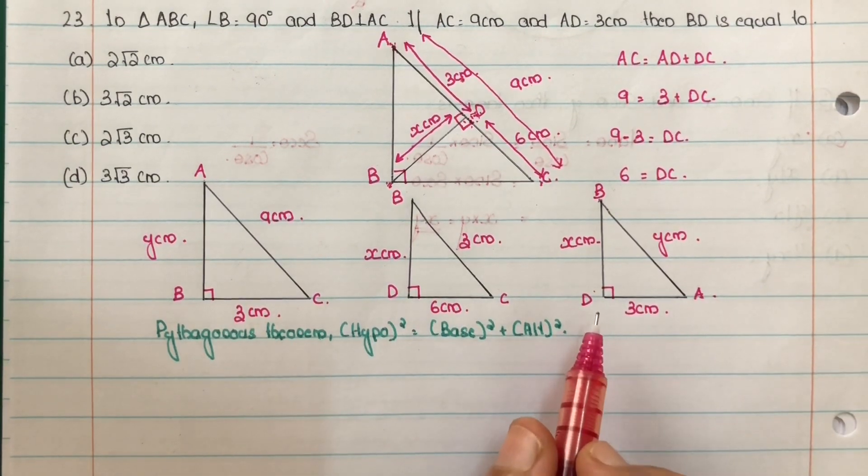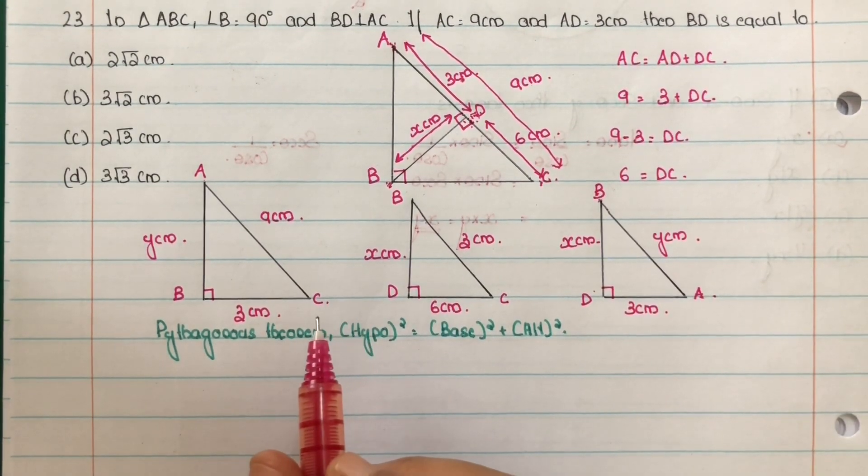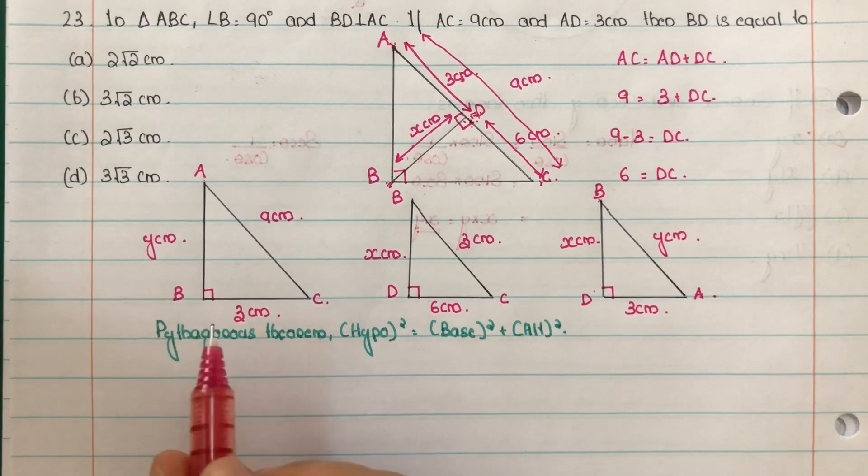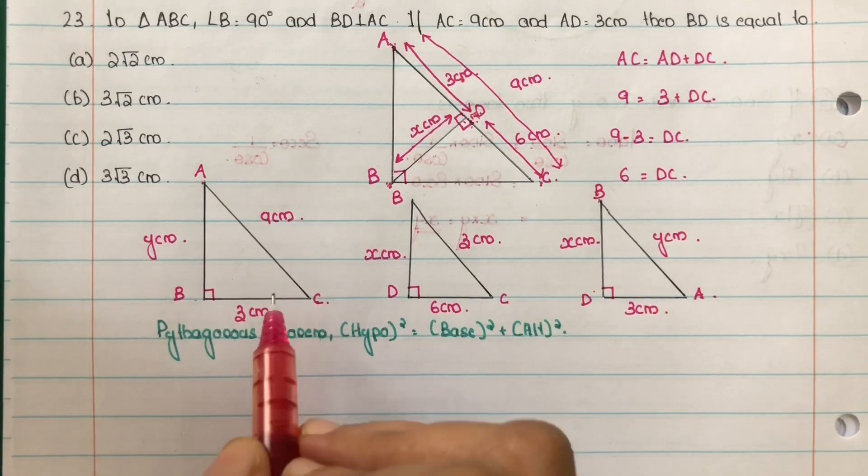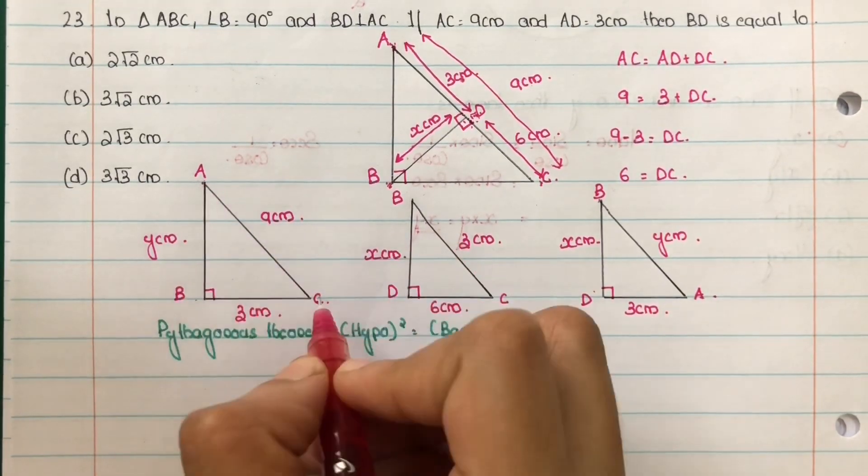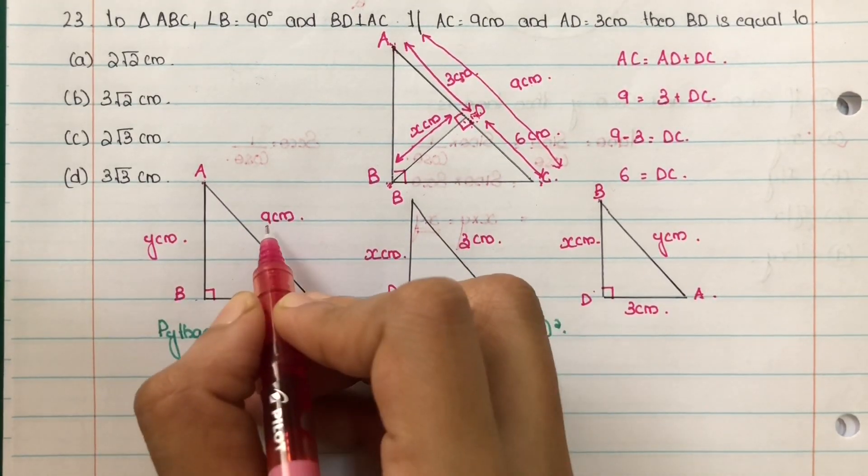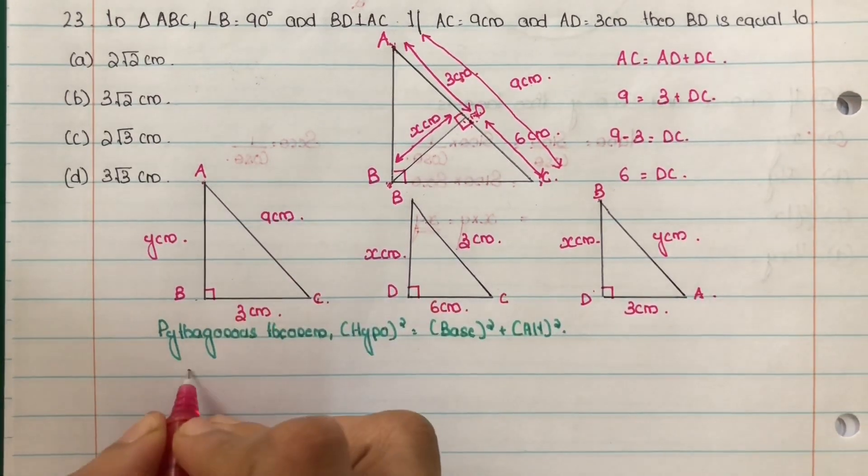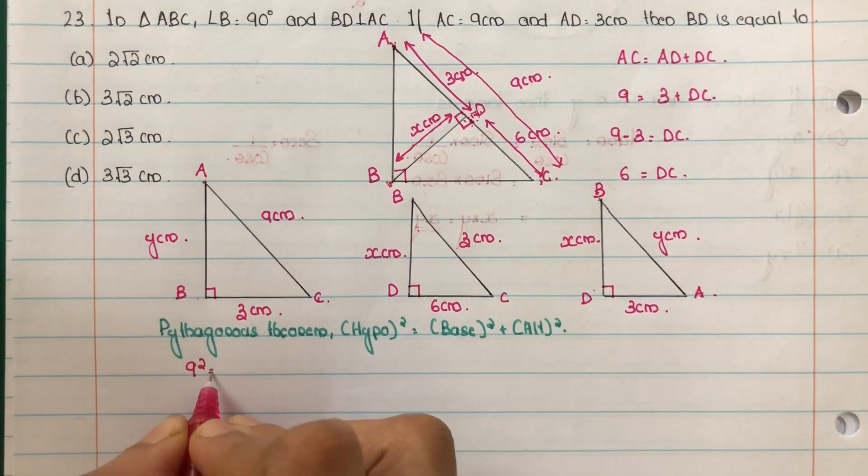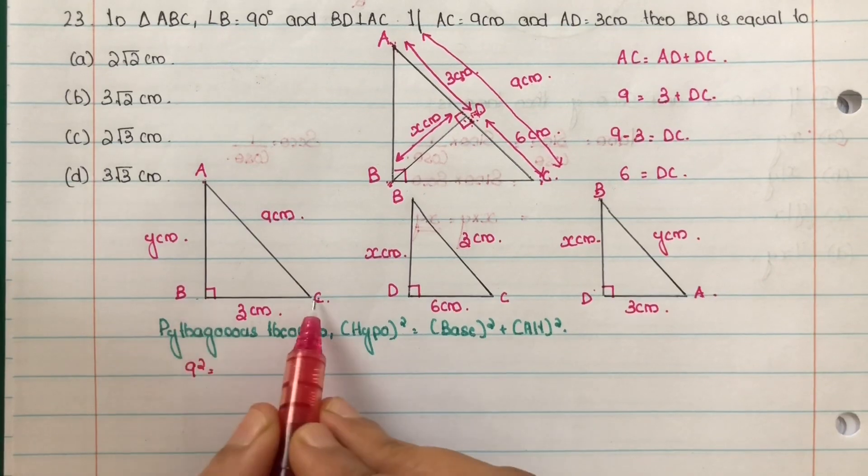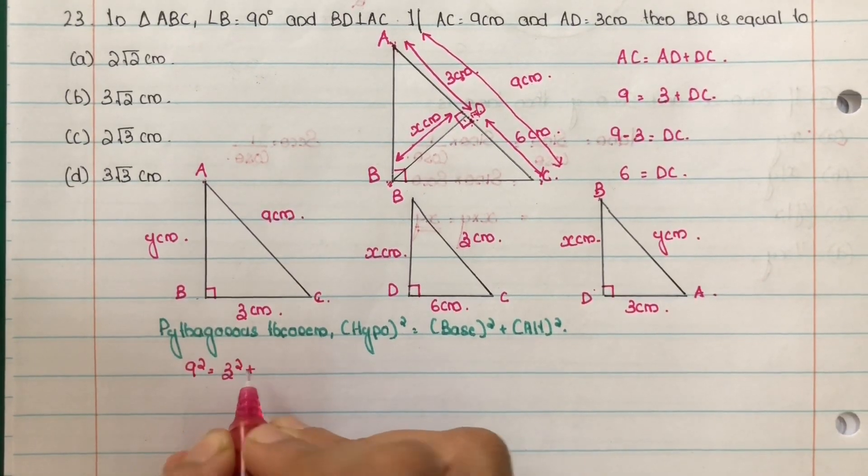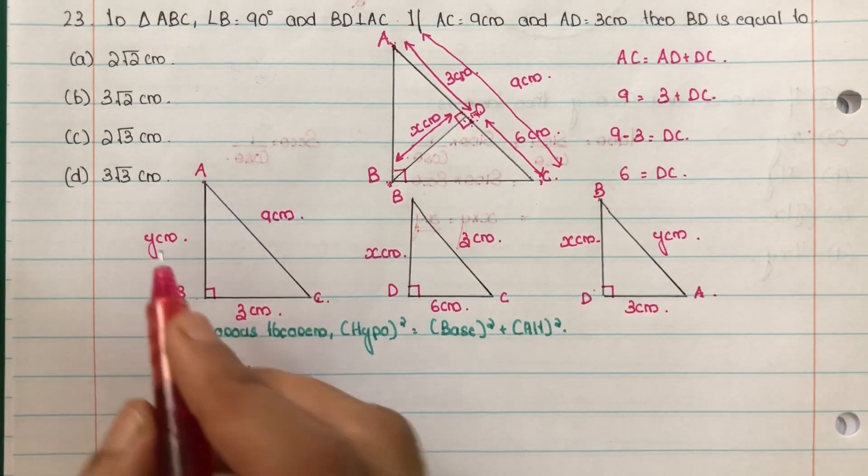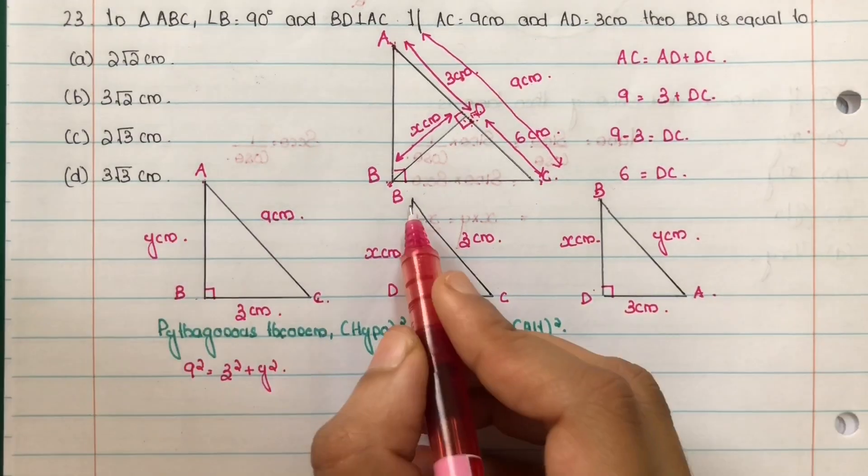Next, in these three right angled triangles, we apply Pythagoras theorem. Okay. In Pythagoras theorem, the hypotenuse square is equal to base square plus altitude square. First, consider right angled triangle ABC by applying Pythagoras theorem. Hypotenuse, hypotenuse is AC. AC equal to 9 cm. So, hypotenuse square, that is 9 square, is equal to base. Base is BC, that is z square, plus altitude. Altitude is AB, that is y square.